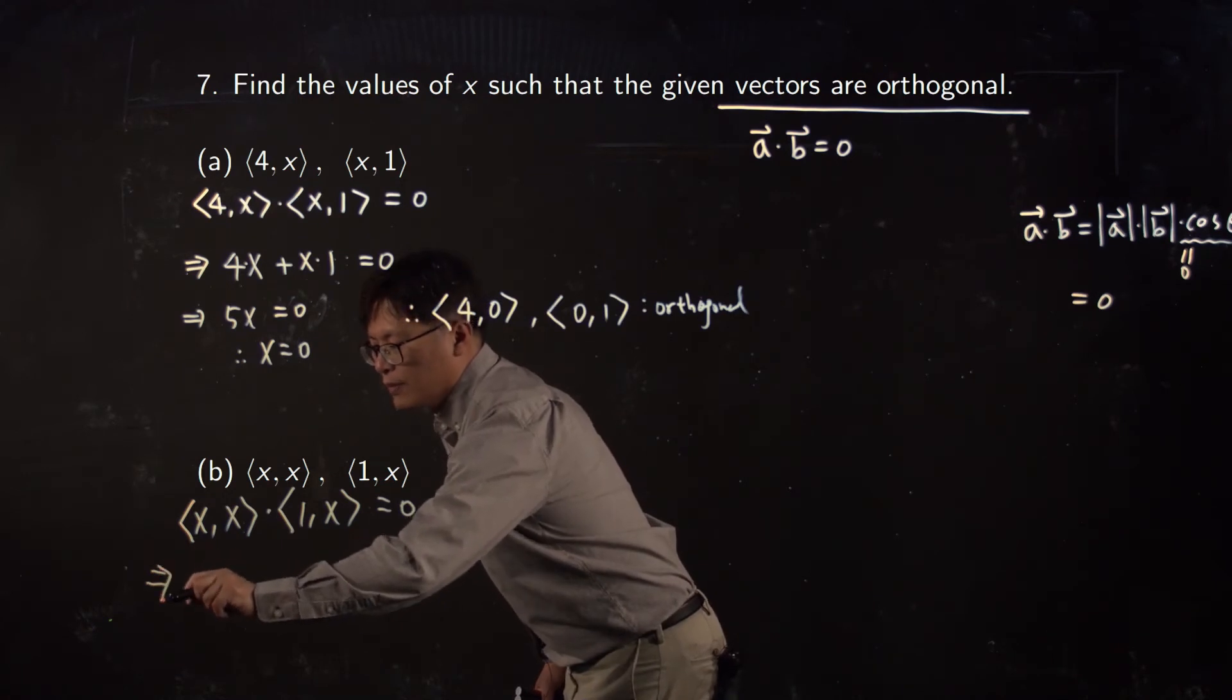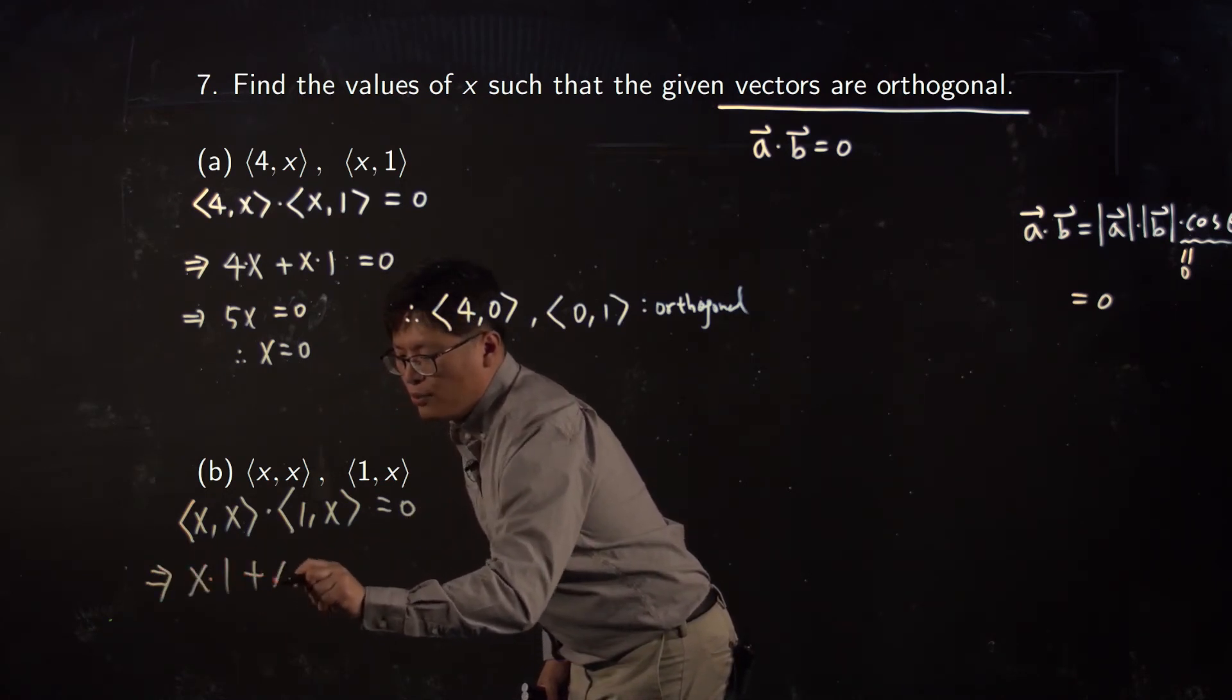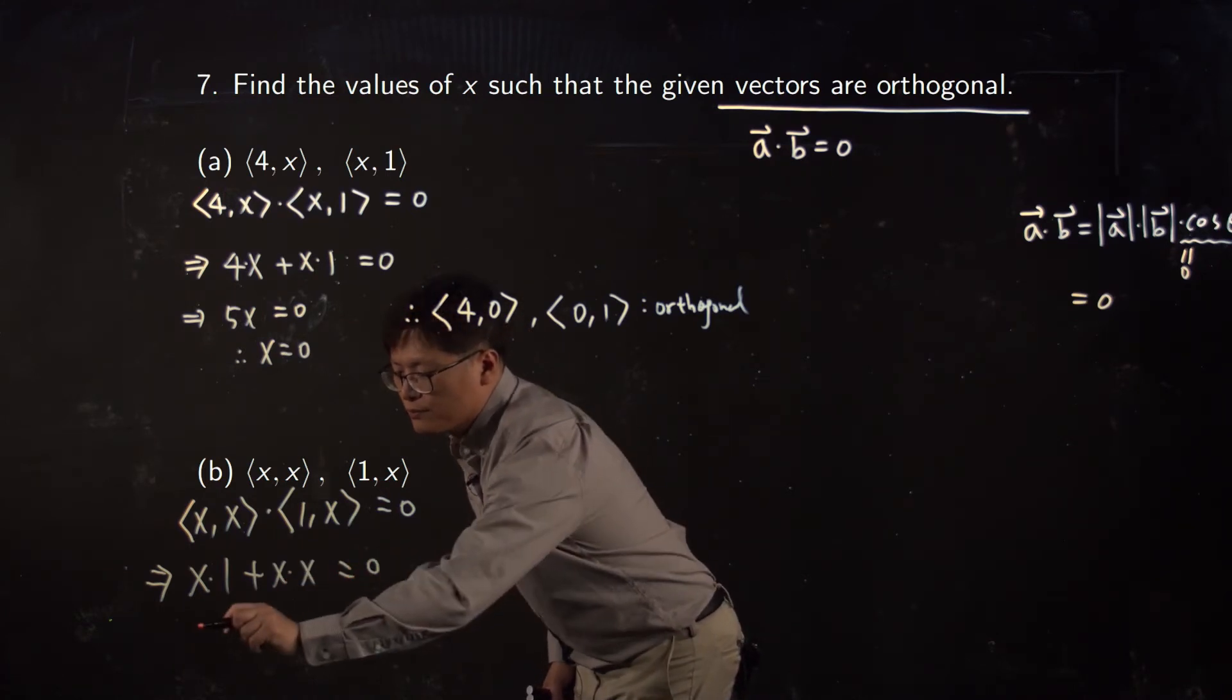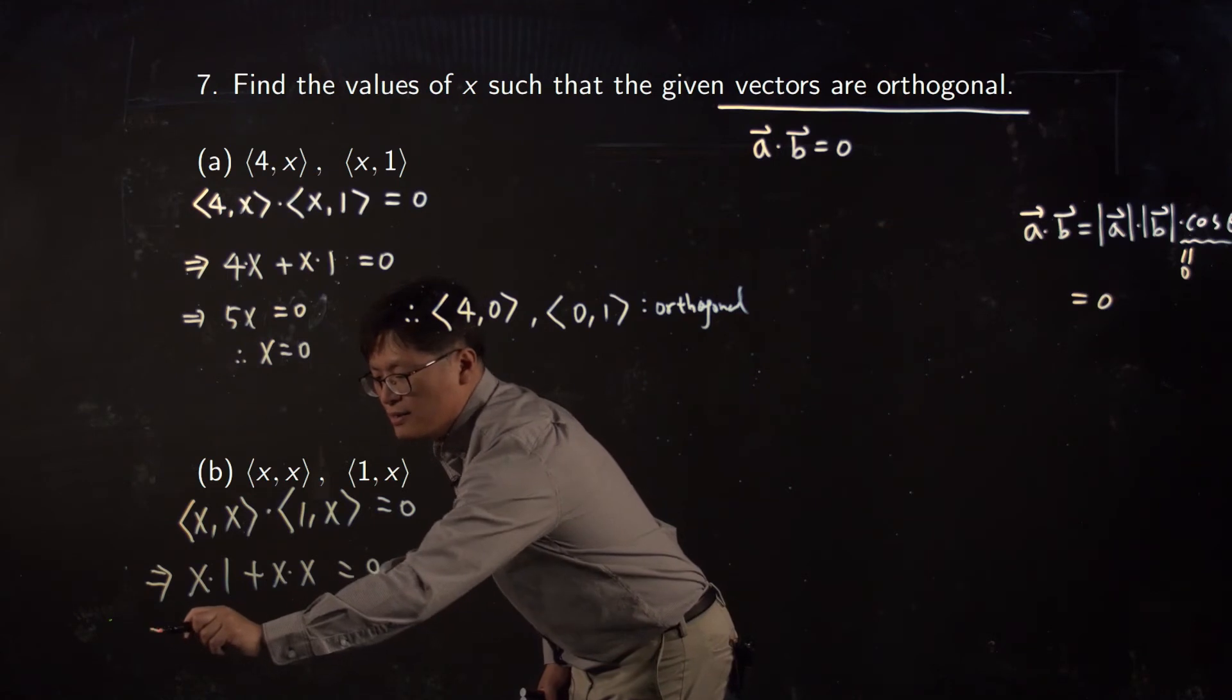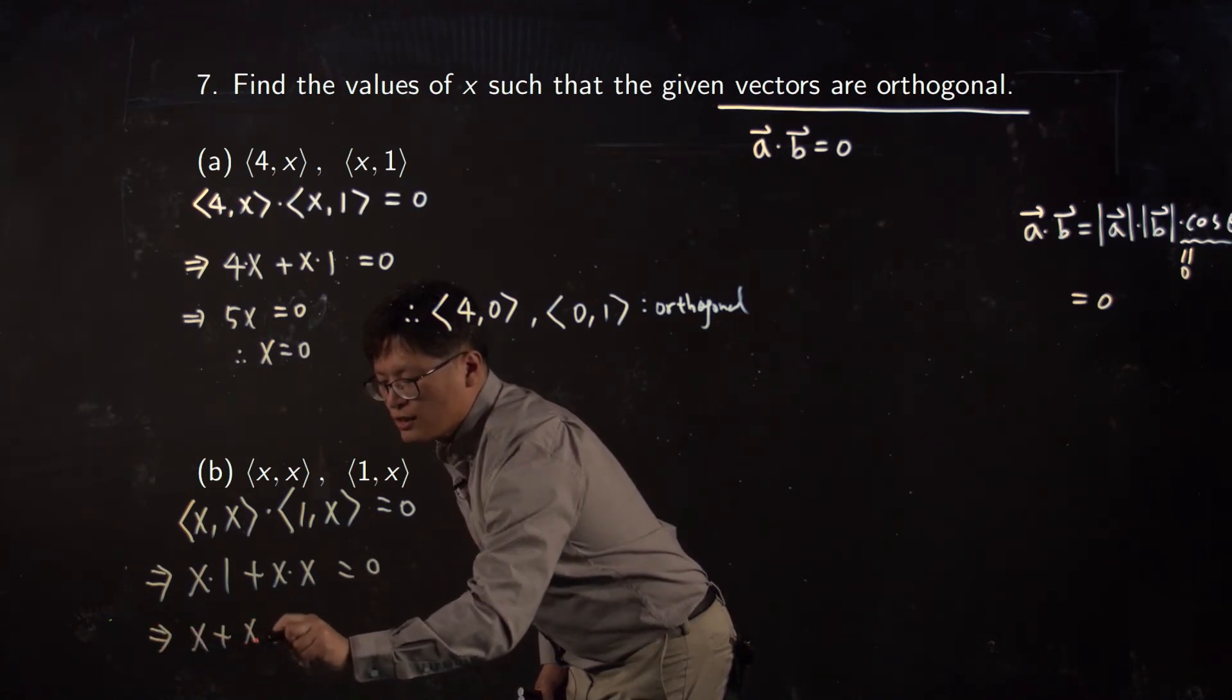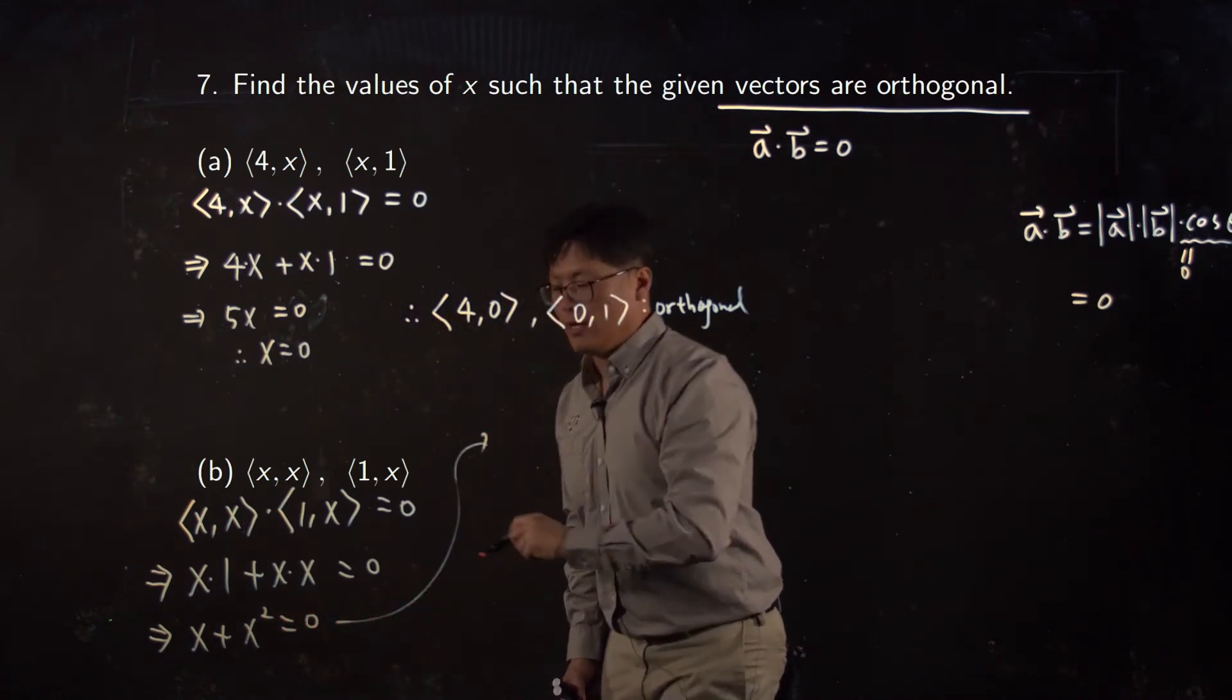X times one plus product of your second y component equals zero. That is x plus x squared is equal zero. Let me move up here. Then it is quadratic.